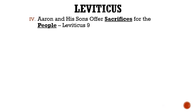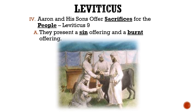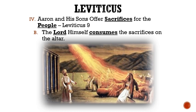Roman numeral 4: Aaron and his sons offer sacrifices for the people. Letter A: They present a sin offering and a burnt offering. Moses told Aaron to offer a young calf and a kid of the goats for a sin offering, and then a ram and a young bull for a burnt offering. They obeyed Moses and followed the instructions and laws for offering these sacrifices. Letter B: The Lord himself consumes the sacrifices on the altar.